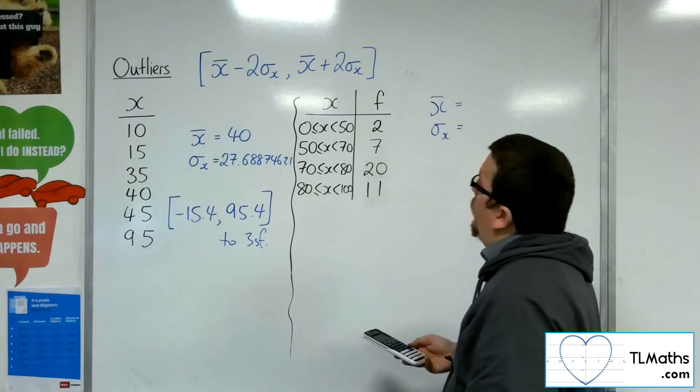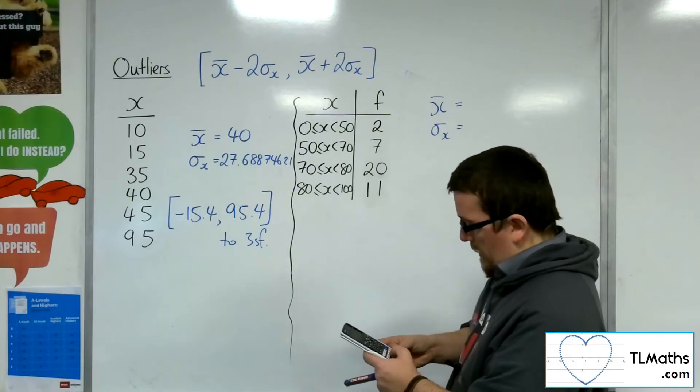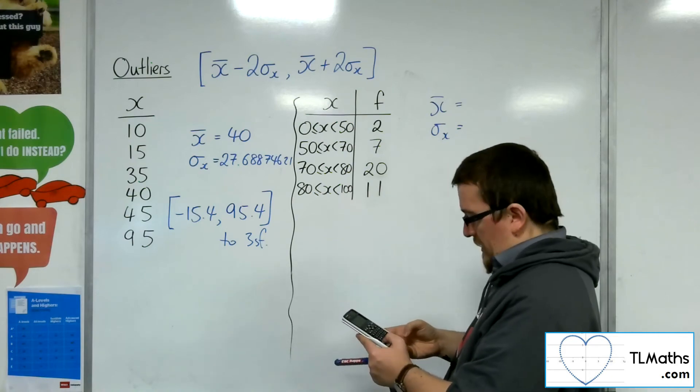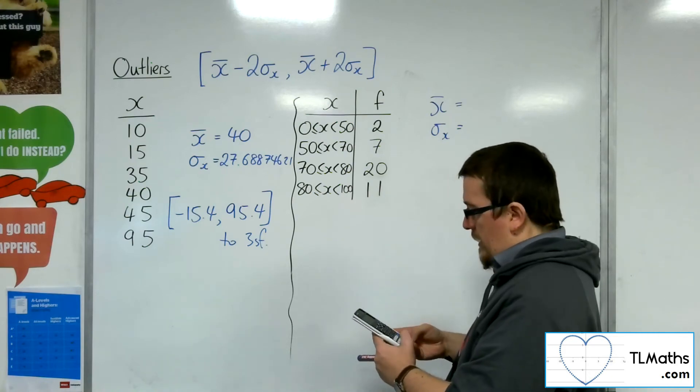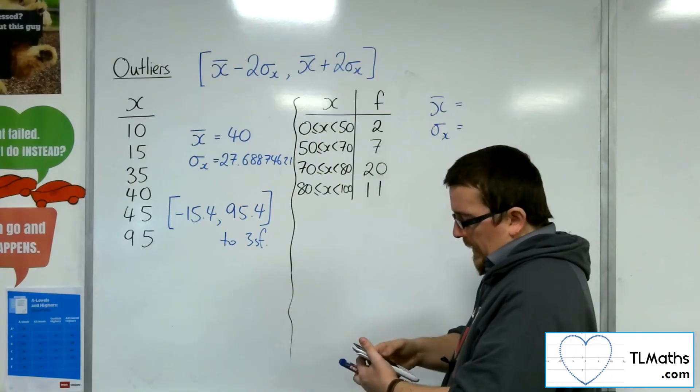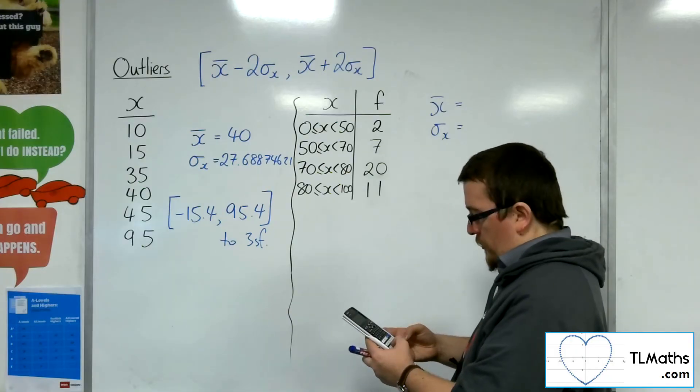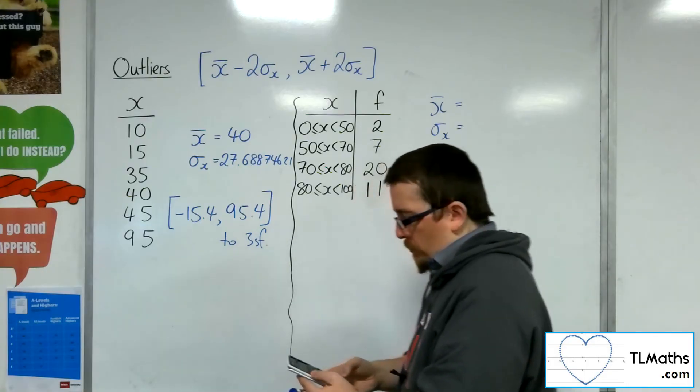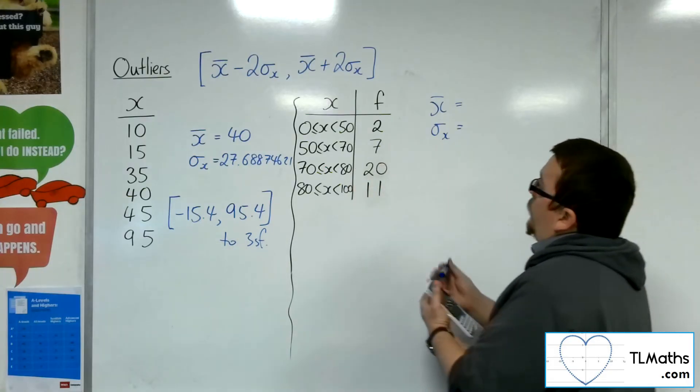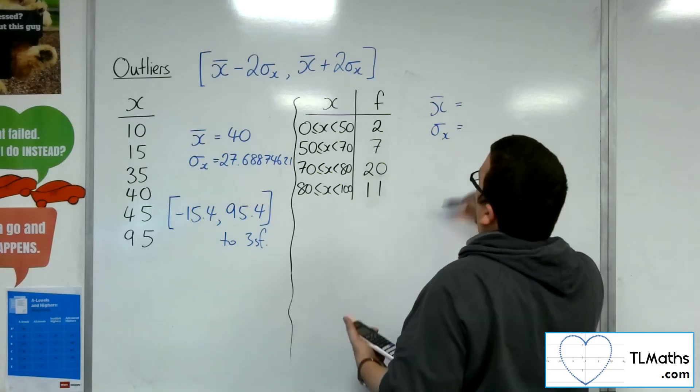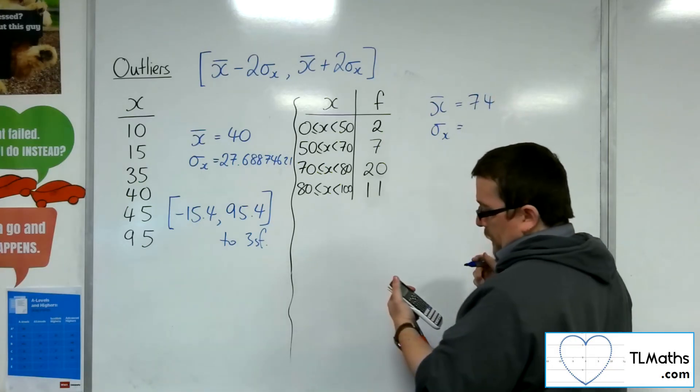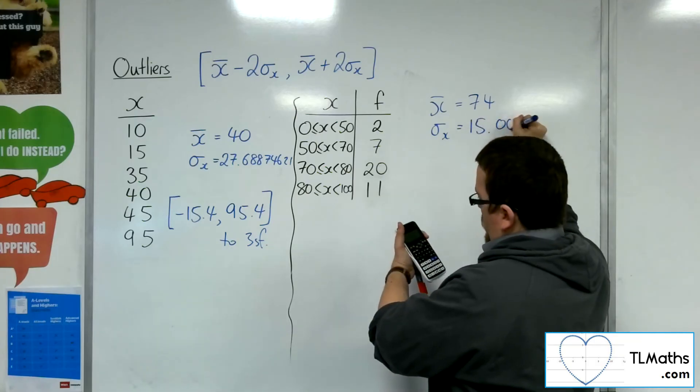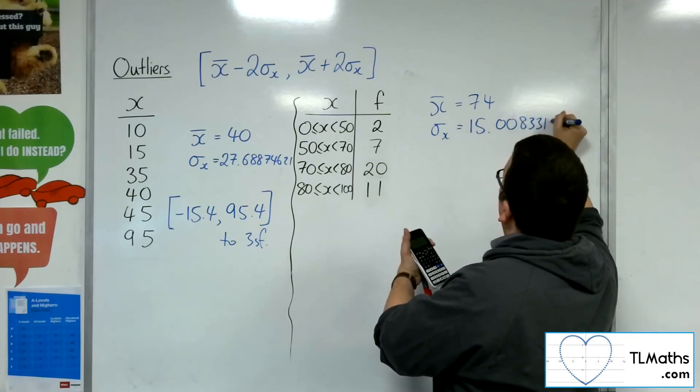So we want to put in the midpoints as the x's. So we'd have 25, then we'd have 60, then we'd have 75, and then 90. And then for the frequencies, we've got 2, 7, 20, and 11. Press the AC button, option number two. So we get a mean of 74 and a standard deviation of 15.00833102.